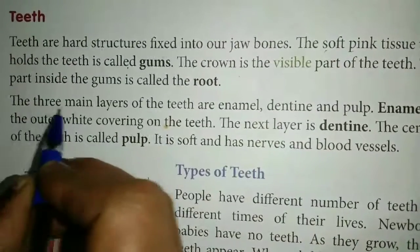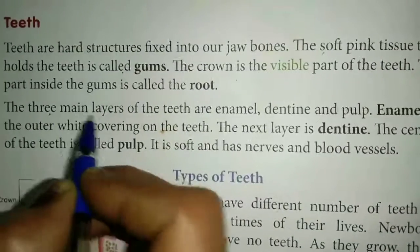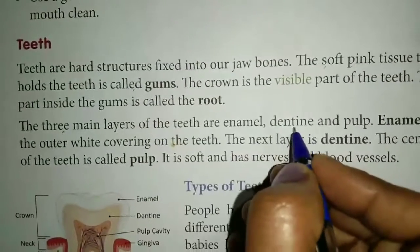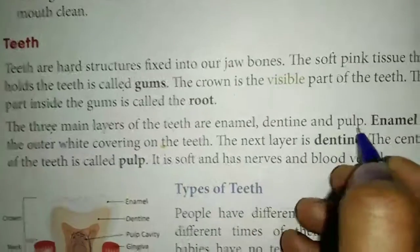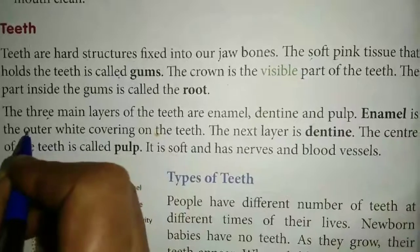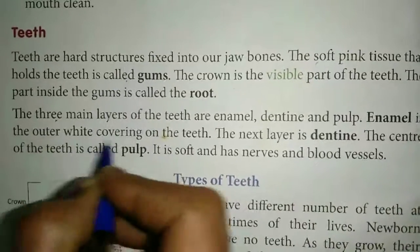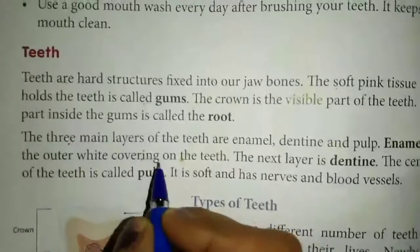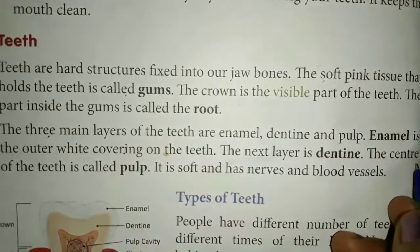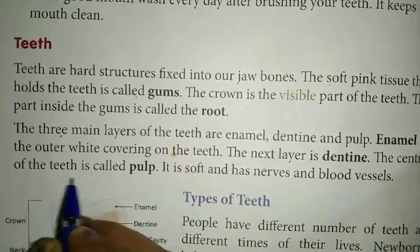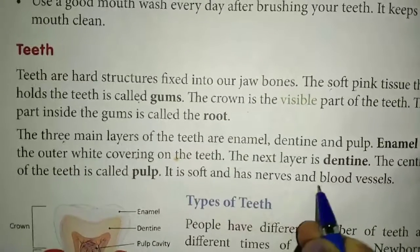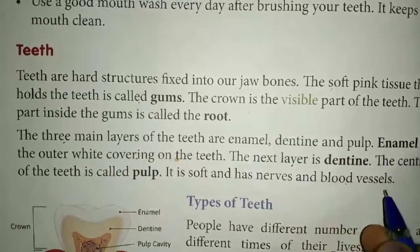The three main layers of the teeth are enamel, dentine, and pulp. Enamel is the outer white covering on the teeth. The next layer is dentine. The center of the teeth is called pulp — it is soft and has nerves and blood vessels.